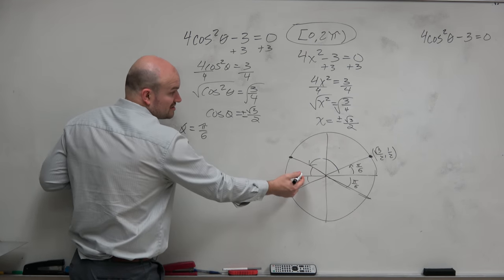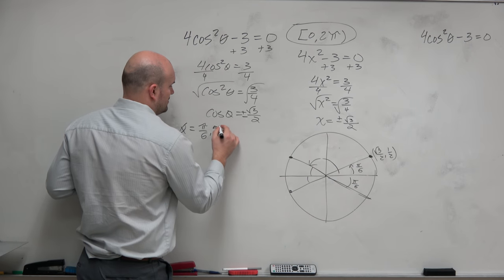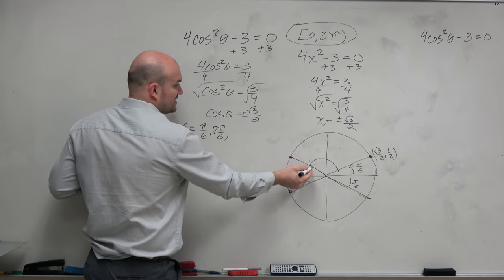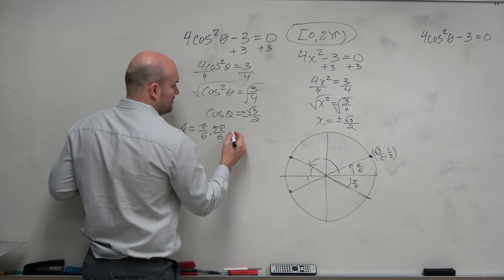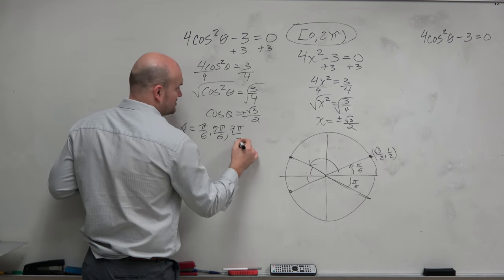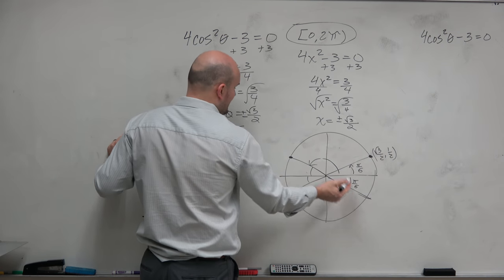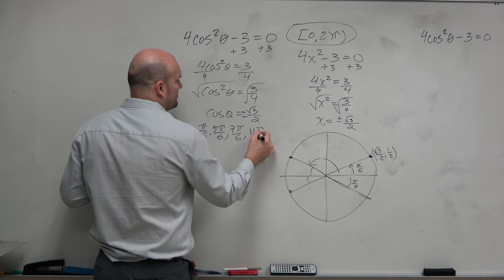This next angle is π over 6 plus π, which would be 7π over 6. And then this angle is π over 6 short of 2π, which would be 11π over 6.